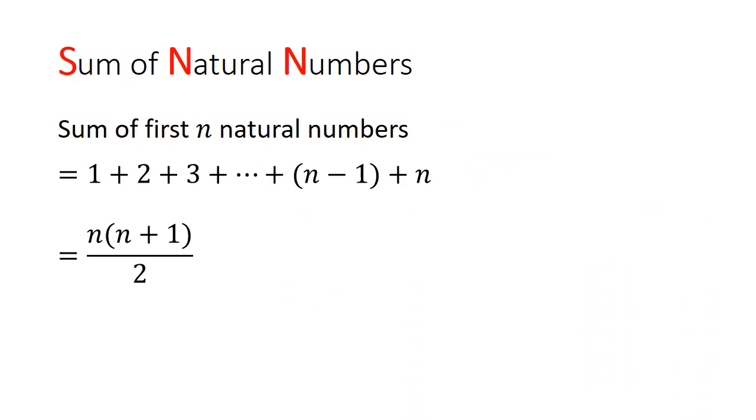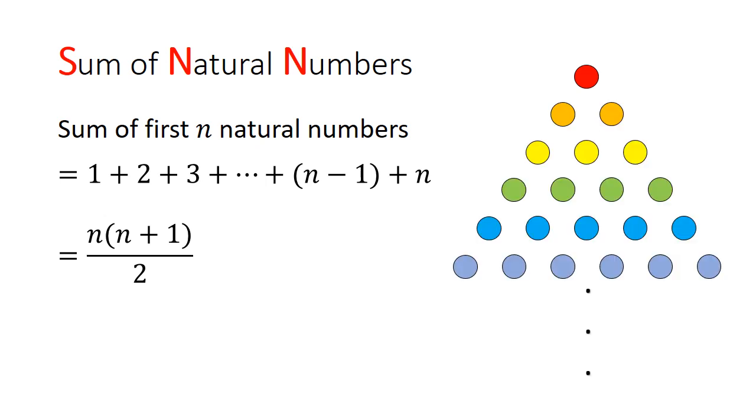In general, the formula for taking 1 plus 2 plus 3 plus 4 and so on until n is n times n plus 1 divided by 2. The numbers that we generate from this are also known as the triangular numbers. But what if the numbers that we are adding up do not increase by just 1? And what if there are too many terms to add up?